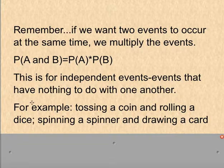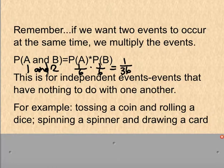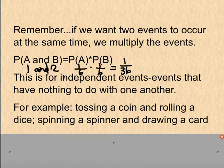When we want events to occur together, we need to multiply the probabilities. For example, the probability of getting a 1 on a number die and then a 2 is 1/6 times 1/6, which equals 1/36. Rolling dice is independent because it doesn't matter what you get on the first roll — you still have the same opportunities on the second roll.